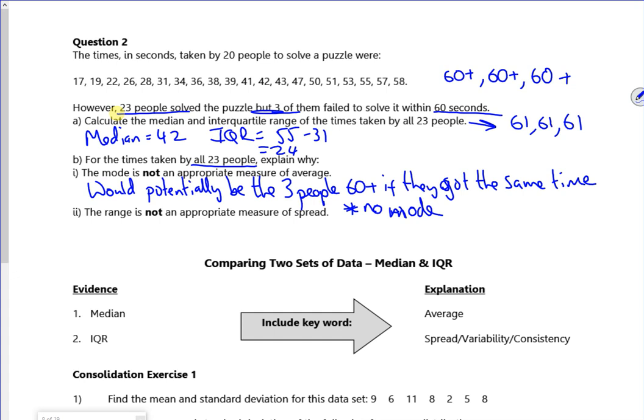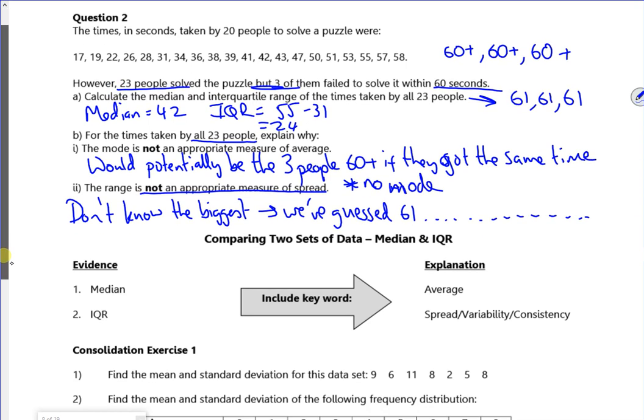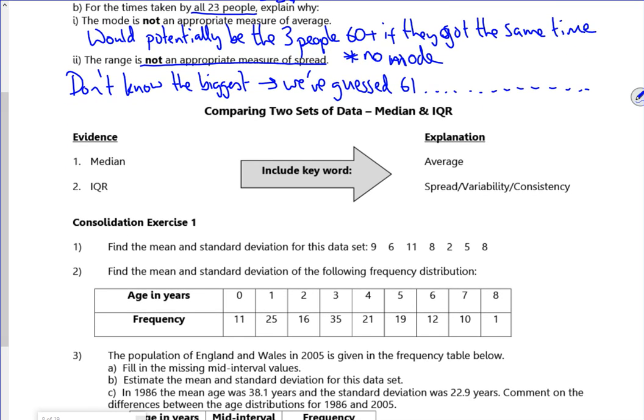So why is the range not an appropriate measure? We don't know the biggest ones, do we really? We don't know the biggest. We've guessed 61. Right then. So when we talk about the median, you mention the average. When we talk about the interquartile range, we talk about the spread, the consistency. So I think that's the end of the first lesson. We're done. Well done, everybody. Bye-bye.